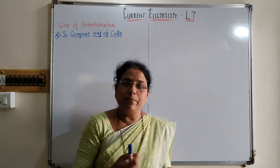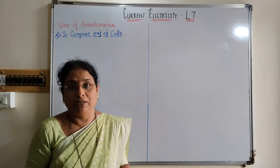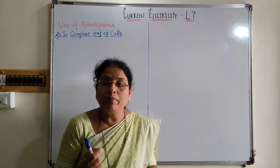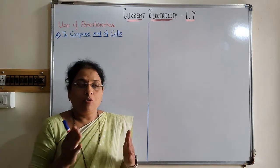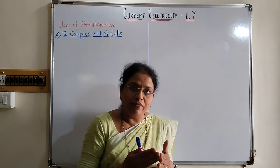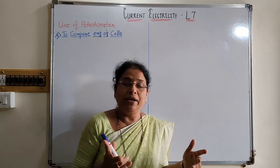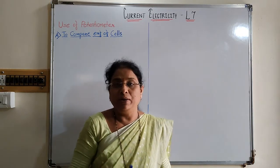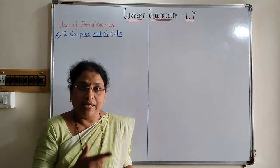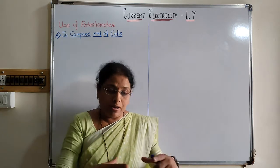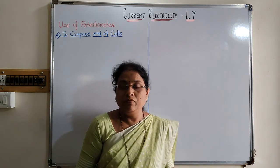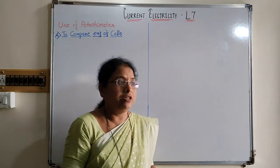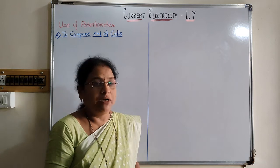In the potentiometer, there is a metal wire of uniform cross-section having length of about 4 to 10 meters. This 4 to 10 meter wire is cut into 4 or 10 pieces, each piece having length 1 meter. Those wires are fixed on a wooden platform with the help of copper strips in a zigzag way, and that gives us the instrument that is the potentiometer.